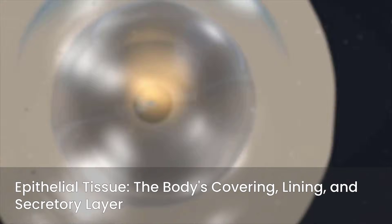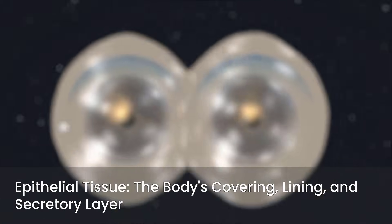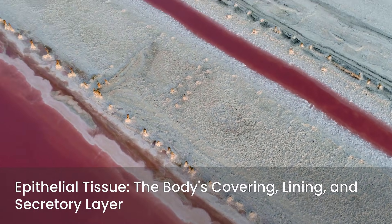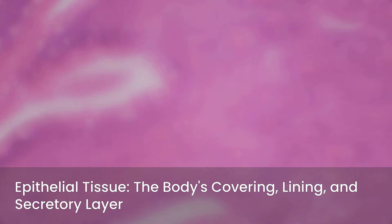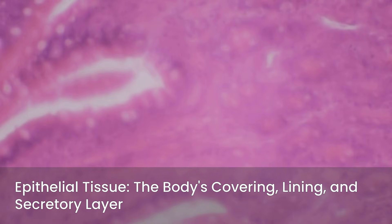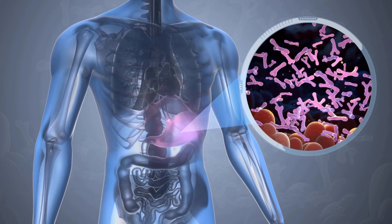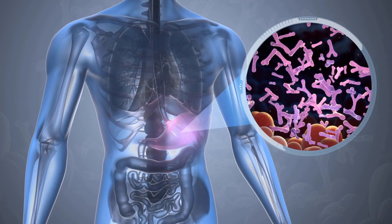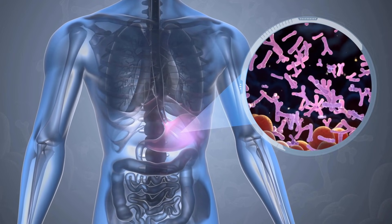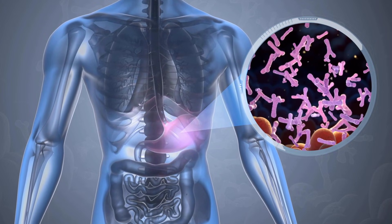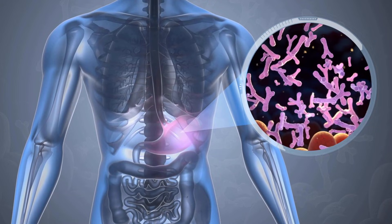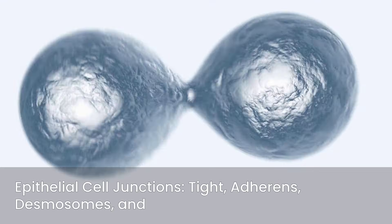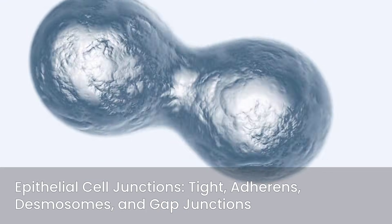Epithelial tissue serves as the body's covering, lining, and secretory tissue — it forms barriers, facilitates absorption, and produces various substances. There are several key types classified by shape and layering: squamous cells are flat, cuboidal cells are cube-shaped, and columnar cells are tall and column-like. Transitional epithelium, found in the bladder, can change shape. Epithelial cells are tightly packed and connected by specialized cell junctions.